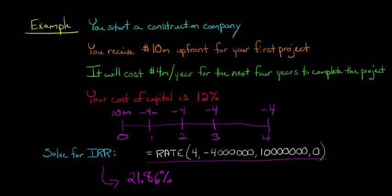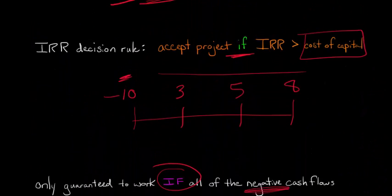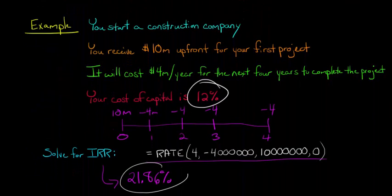And now let's think about this. So our cost of capital is 12%. So normally, if we go back to our IRR decision rule, we're going to accept if the IRR is greater than that opportunity cost of capital. So is the IRR greater than 12%, is 21.86% greater than 12%? Of course it is. So according to the IRR decision rule, we should accept this project.